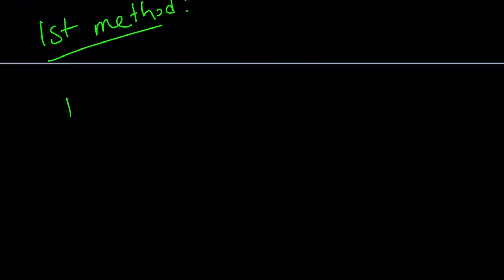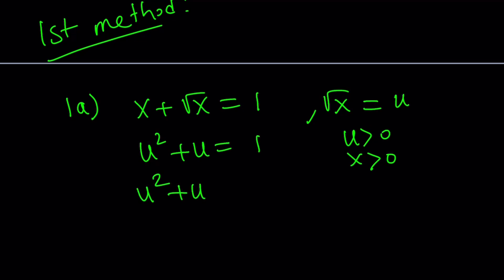So 1a is about solving this equation by using substitution. Of course, substitution rocks, right? Let's square root of x equal u. And obviously u is positive, x is positive. I don't think x equals 0 is going to work here. So they're positive. And in that case, u squared plus u equals 1. And do you see what I see? The golden ratio, maybe? Something like that? Anyways.